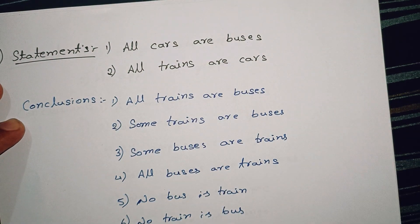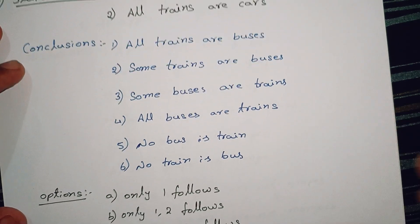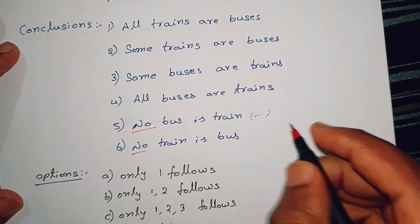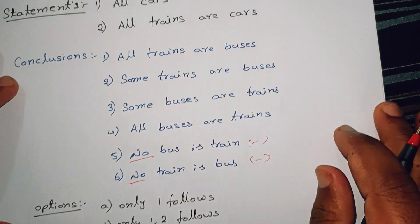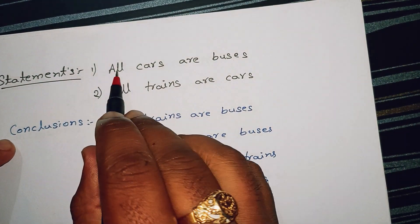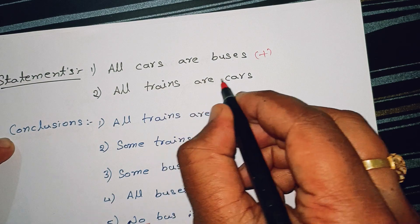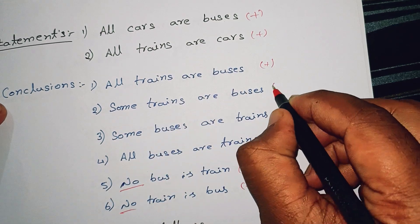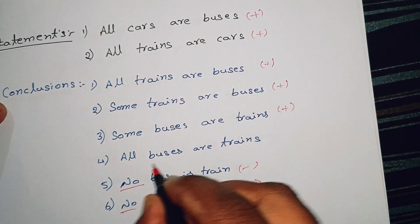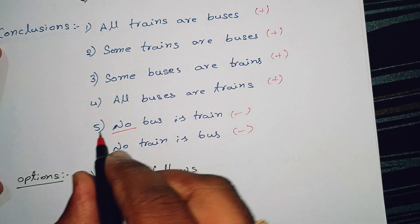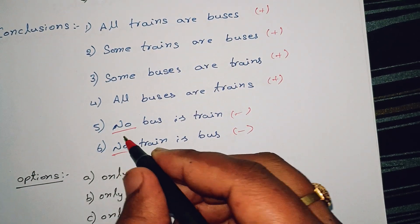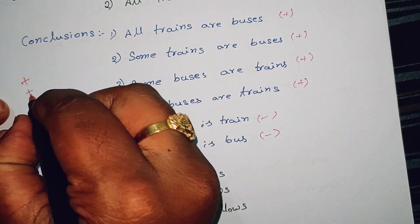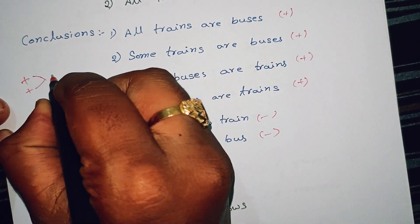The main reason is that the first statement is a negative statement. All cars are buses — this is a positive statement. All trains are cars — this is a positive statement. All trains are buses — this is a positive statement. Some trains are buses — this is a positive statement. Some buses are trains — this is a positive statement. All buses are trains — this is a positive statement. So we have already discussed that we have two positive statements and we have positive conclusions.